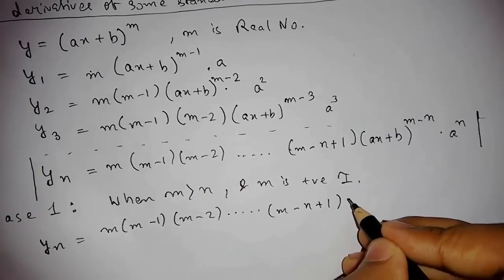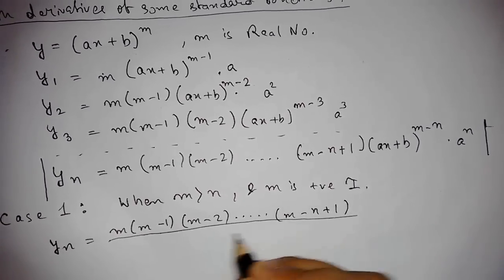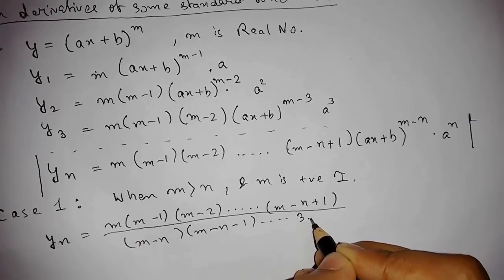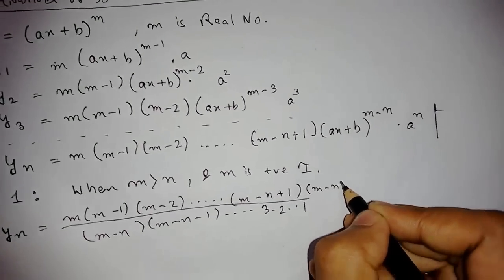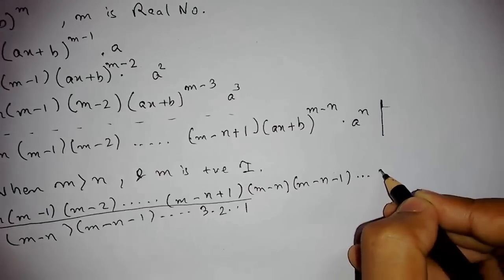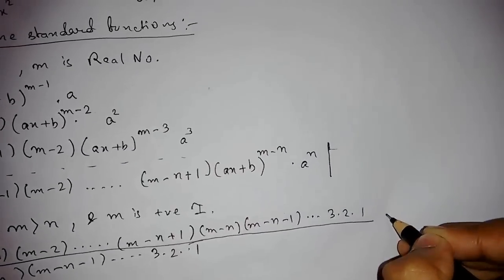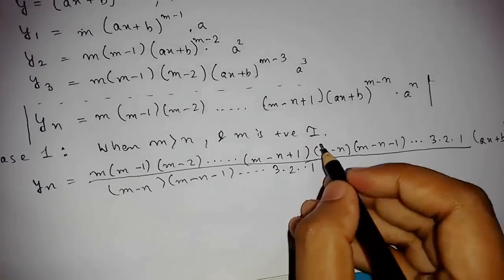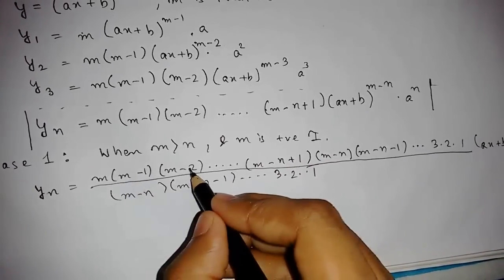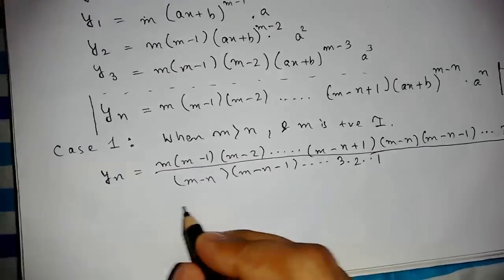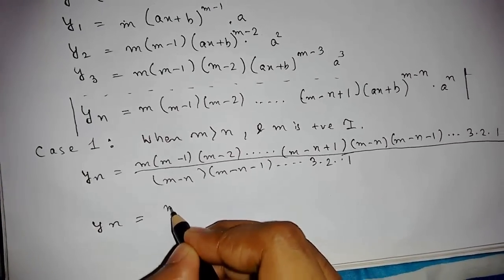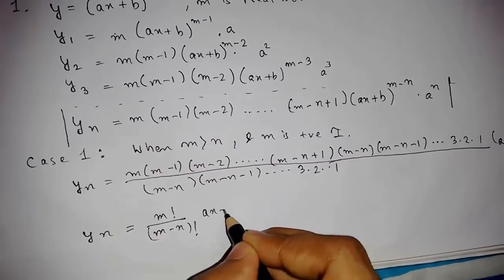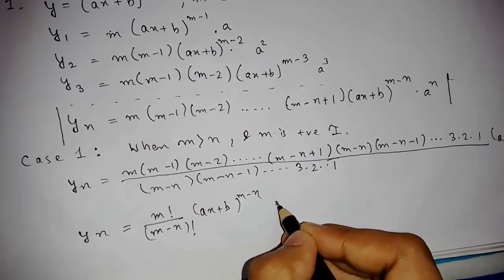Continuing — we multiply and divide by (m−n)(m−n−1)···3·2·1 for both numerator and denominator. So writing the full term: yₙ = [m(m−1)(m−2)···(m−n+1)] times (ax+b)^(m−n) times aⁿ. What this is, basically, is m factorial divided by (m−n) factorial. So this will be yₙ = m! / (m−n)! times (ax+b)^(m−n) times aⁿ.